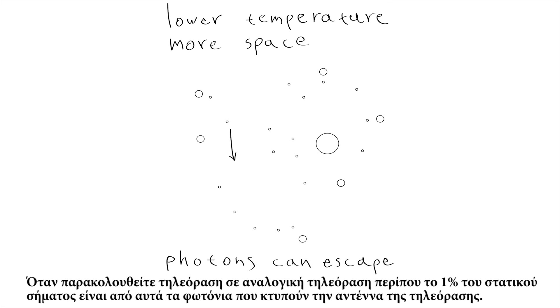When you watch television on analog TV, about 1% of the static signal is from those photons hitting the television antenna.